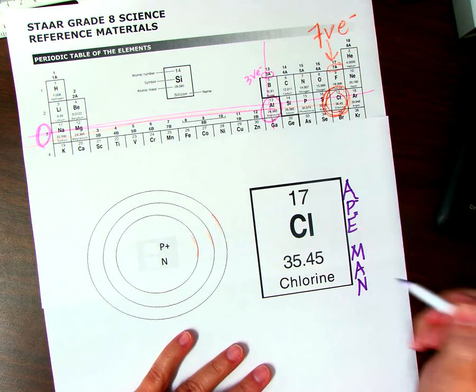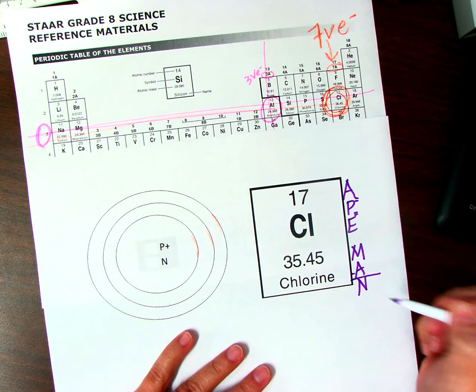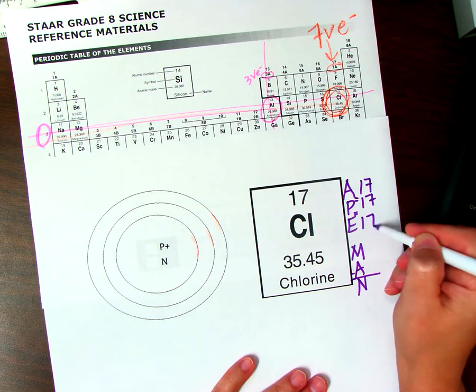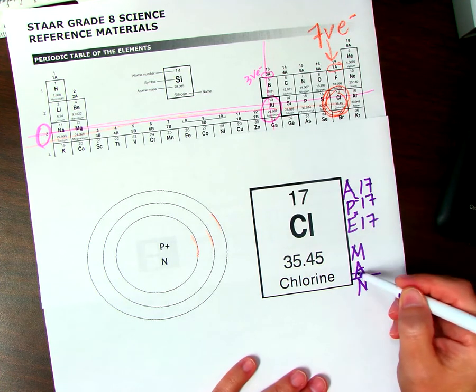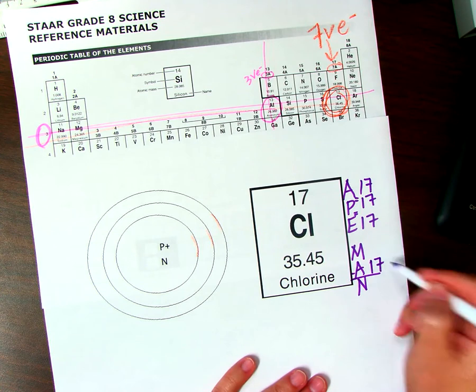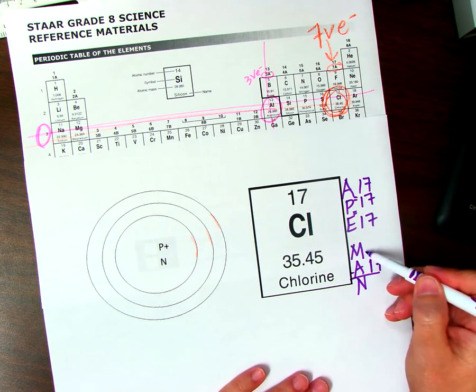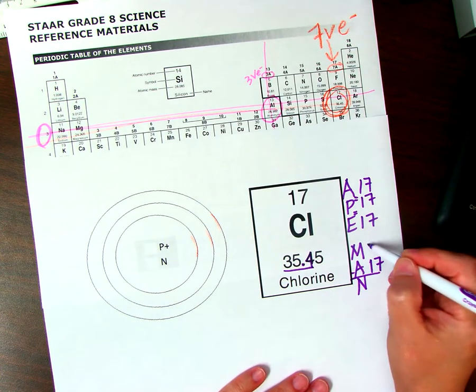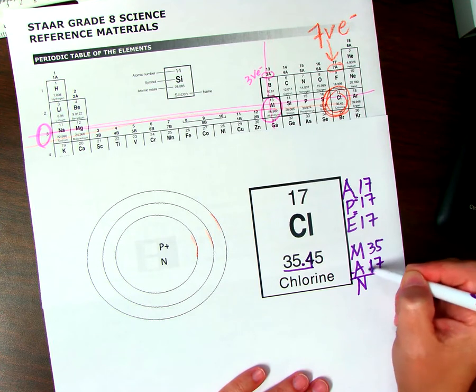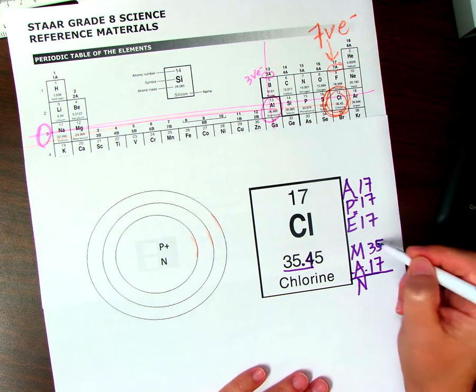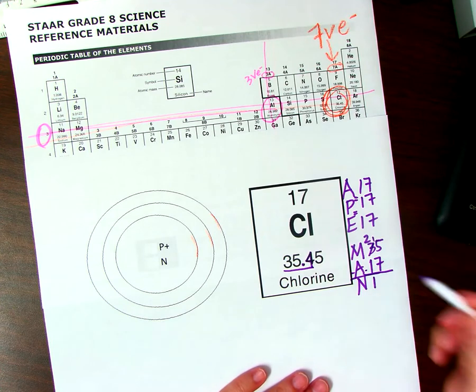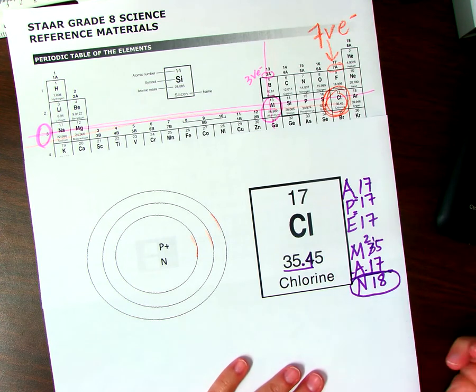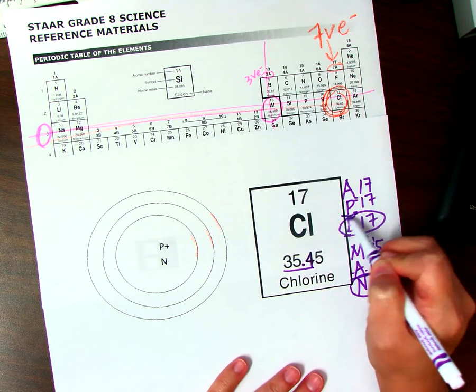These equal each other, and M minus A equals N. So our atomic number is 17, which means we're going to have 17 protons, 17 electrons. Our other A down here means the same thing, atomic number. We'll put our 17 here. Mass, we have 35.4, so we're going to keep this at 35. 35 minus 17. This is how many neutrons we're going to have. 18 neutrons. So here's our subatomic particles. We have 18 neutrons, 17 electrons, 17 protons.